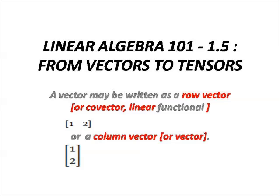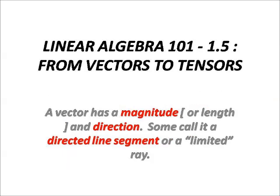A row vector is also named covector or linear functional by various authors or presenters. A vector has a magnitude or length and direction. Some call it a directed line segment or a limited ray.